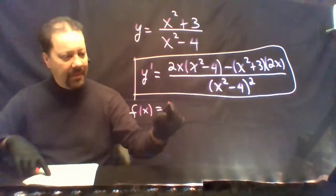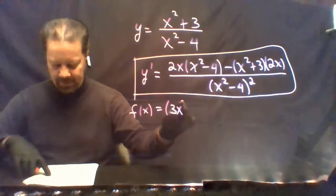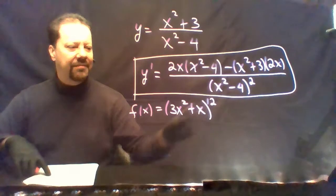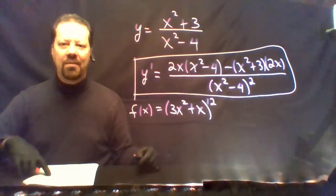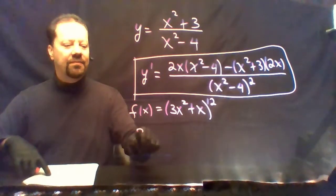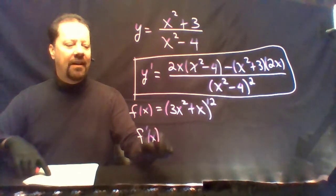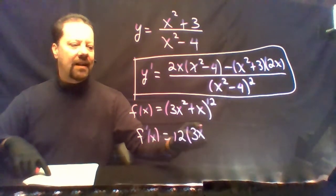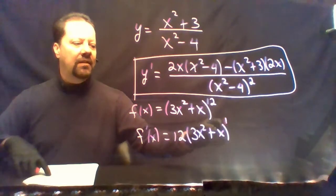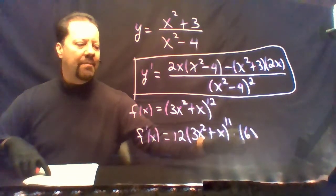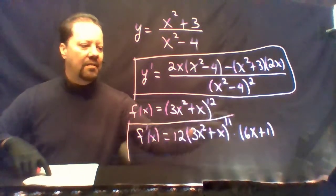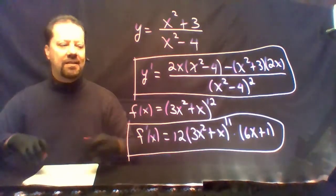On the next problem, we have (3x² + x) to the power 12. Here you're being tested over the chain rule. f prime of x: bring the power down, leave the inside alone, subtract 1 from the exponent, and then multiply by the derivative of the inside. Don't simplify — box it.